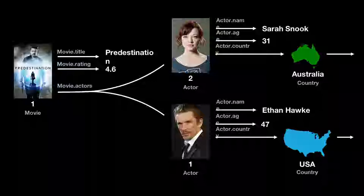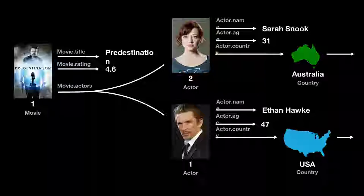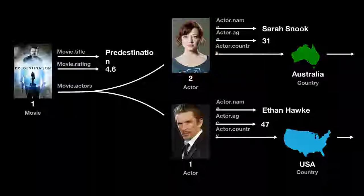This is the graph idea of GraphQL. You have some initial type, and that type references other types. You can keep unfurling and expanding and exploring the graph. A movie has a title — Predestination — a rating of 4.6, and a bunch of actors. Every actor is a certain type. This is very similar to how object-oriented programming works, except you're building this straight into the API.